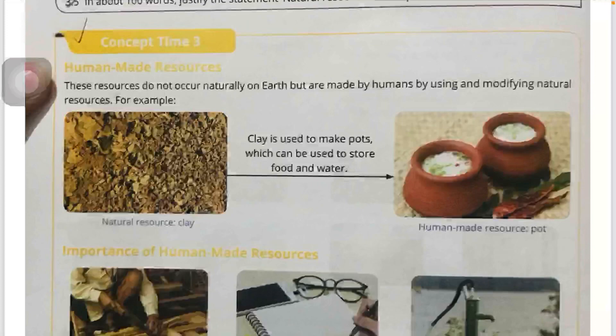So, what do you mean by human-made resources? There are some resources that are not naturally found on earth but are made by humans. Humans use natural resources, modify and change them, and use them to create a new resource. For example, we use clay to build pots, and pots are used to store food and water.